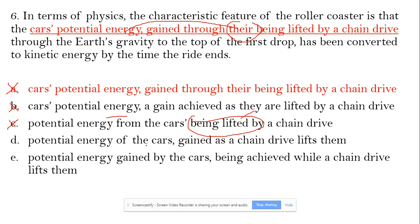D: potential energy of the cars gained as a chain drive lifts them. So, here, 'lifts them' means lifts the cars. Fine. So, D is okay.